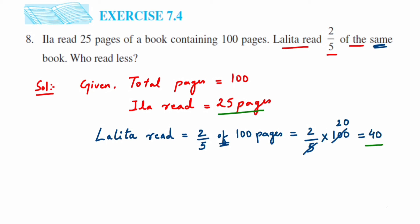So Lalitha read 40 pages and Ila read 25 pages. If we compare both, they are asking who read less. So Ila read less pages as compared to Lalitha. That will be the conclusion here.